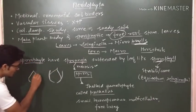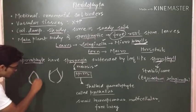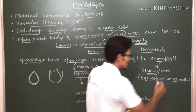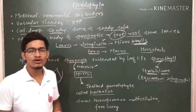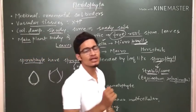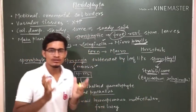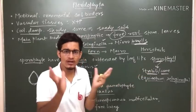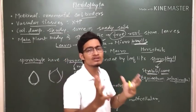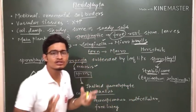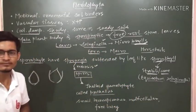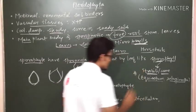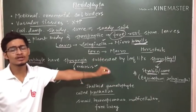When sporophylls are very compact, they form strobili or cone. Examples of plants forming strobili or cones are Equisetum and Selaginella — in these, the subtended leaves or sporophylls become compact and surround the sporangia to form strobili or the cone. This is a very important exam question from this topic.